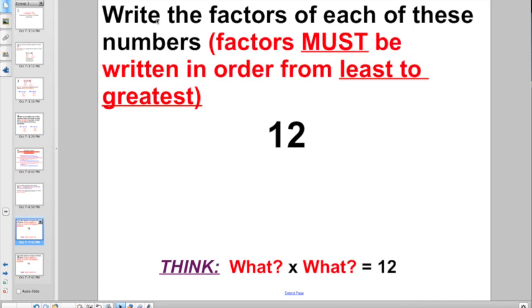And the last little thing I want to tell you: when we list factors of numbers, the factors must be written in order from least to greatest. You can, I'll show you how to figure it out in a pretty easy way, but you can't leave it as your answer. The last step will be to list them in order from least to greatest.